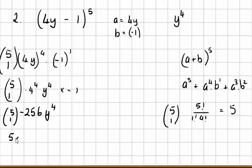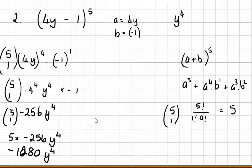So, we end up with 5 times minus 256 y to the power of 4. So, 5 times 256 is that really big number you were talking about, which is 1,280. And y to the power of 4. So, that's the term. The coefficient is the minus 1,280.